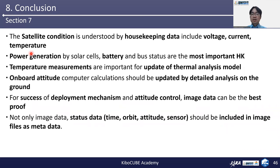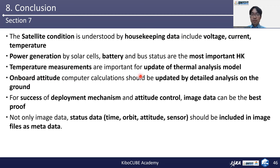This is a summary of Section 7. The condition of a satellite is understood by housekeeping data, including voltage, current, and temperature. Power generation by solar cells, battery, and bus component status are the most important HK. Temperature measurements are important for updating the thermal analysis model. Onboard attitude computer calculations should be updated by detailed analysis on the ground. For the success of deployment mechanism and attitude control, image data can be the best proof. Not only image data, but the status data — time, orbit, attitude sensor — should be included in image files as metadata.